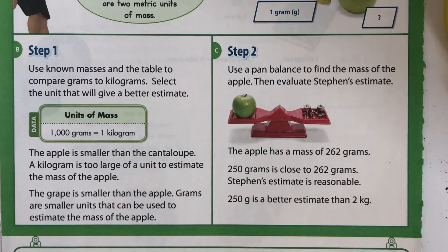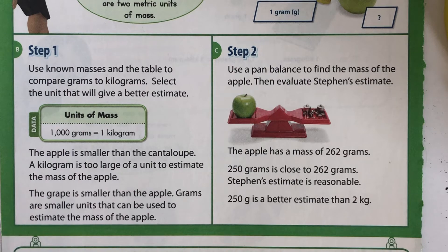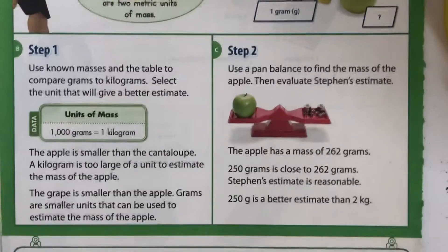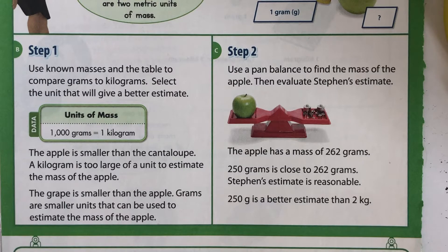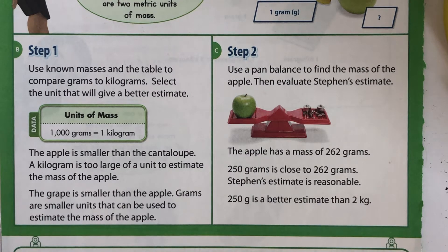The apple is smaller than the cantaloupe. A kilogram is too large of a unit to measure the mass of the apple. The grape is smaller than the apple, so grams are smaller units that can be used to estimate the mass of the apple. Use a pan balance to find the mass of the apple, then reevaluate. The apple has a mass of 262 grams. 250 grams is close to 262 grams, so Stephen's estimate is reasonable. 250 grams is a better estimate than 2 kilograms.